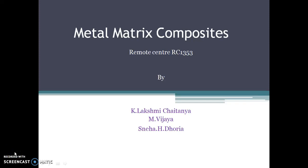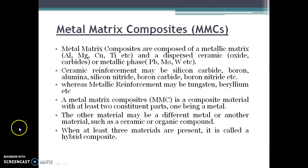Now I am going to discuss about the matrix components. The components which are related matters as the reinforcements are called as the matrix components. It comes from the metallic matrix, which might be aluminum, magnesium, copper, titanium, etc. And a dispersed ceramic — dispersed ceramic may be oxide, carbides, or metallic base.